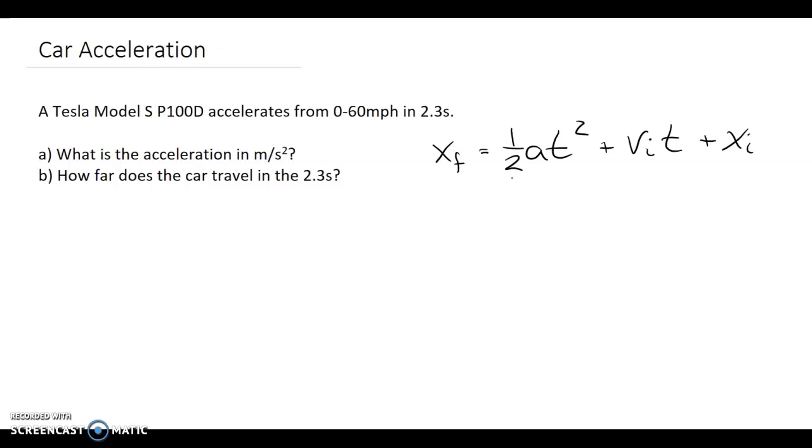If it's accelerating, its velocity is changing. Our velocity is a function of its acceleration times the time it's accelerating, plus the velocity it was going when it started. So we can determine what its velocity will be if we know its acceleration and the time it's accelerating.